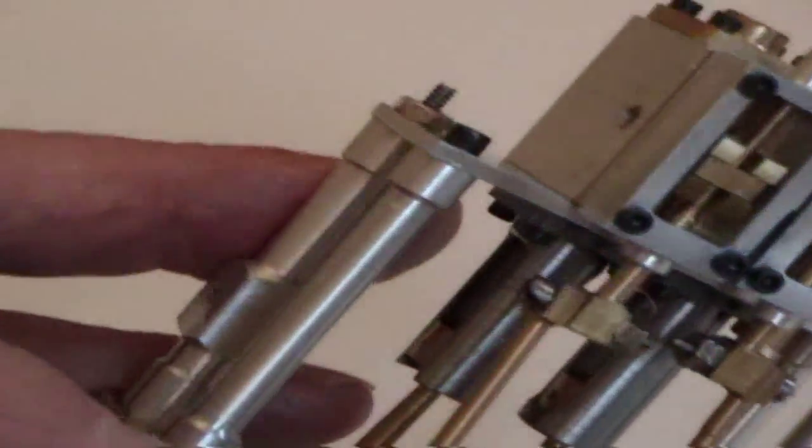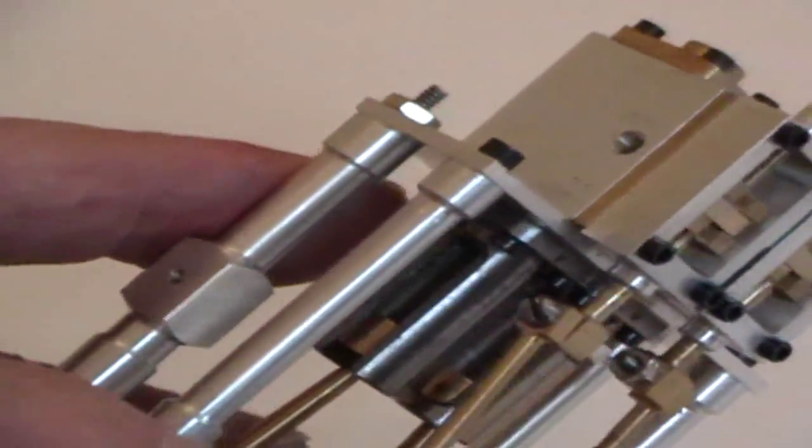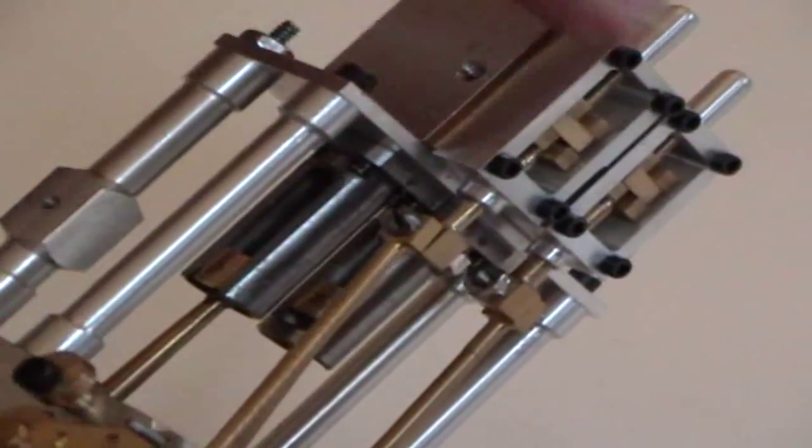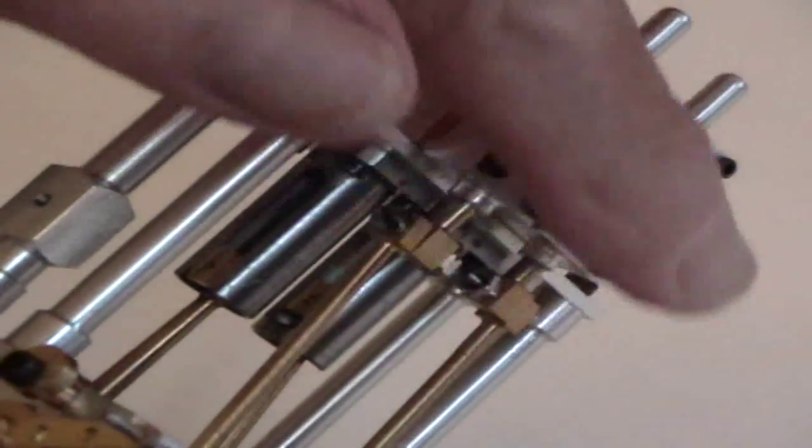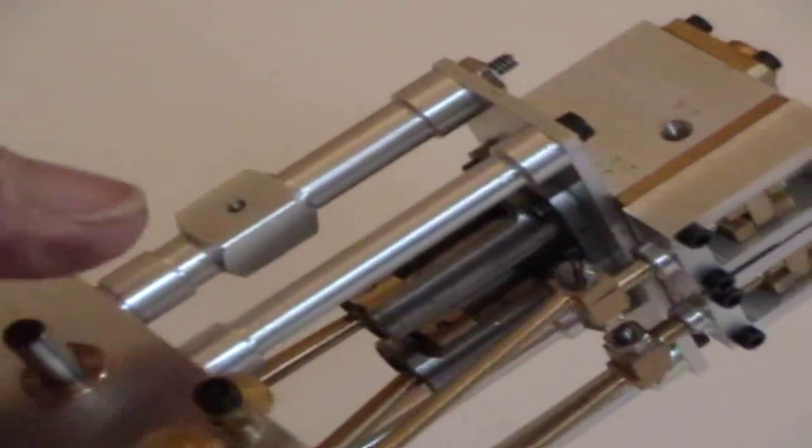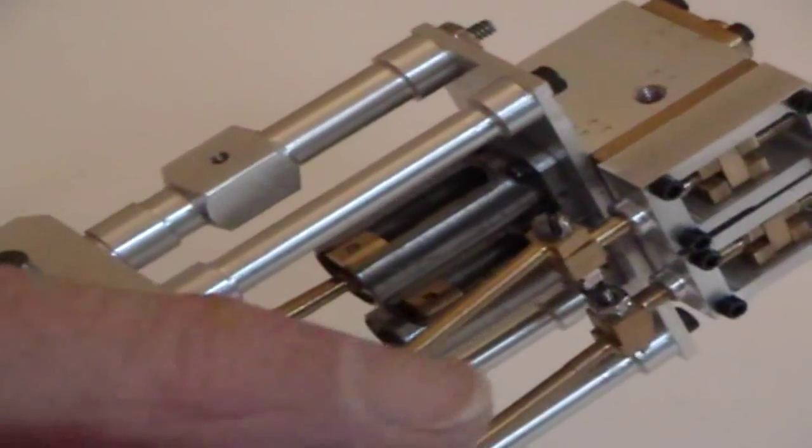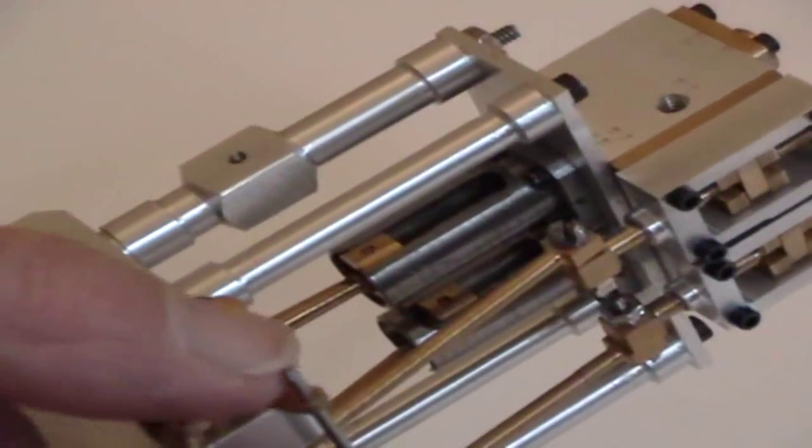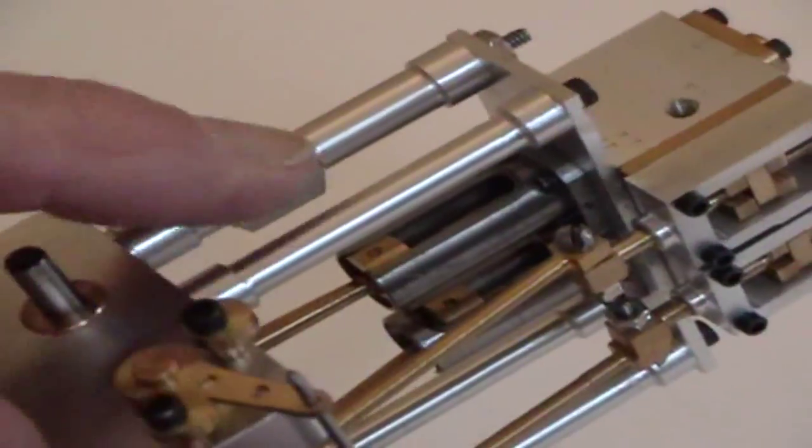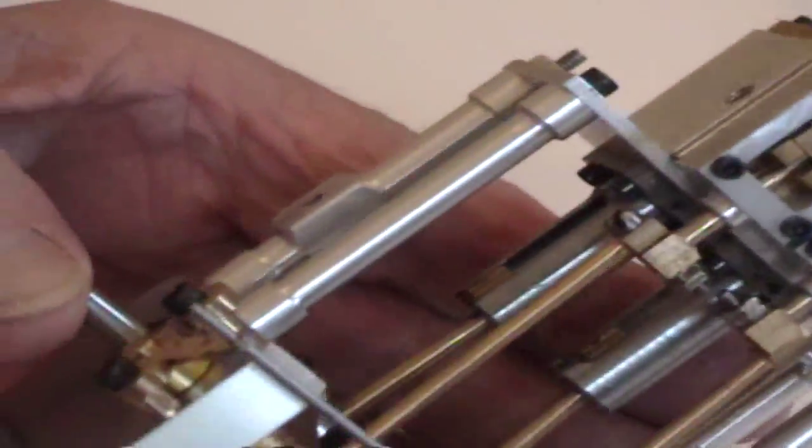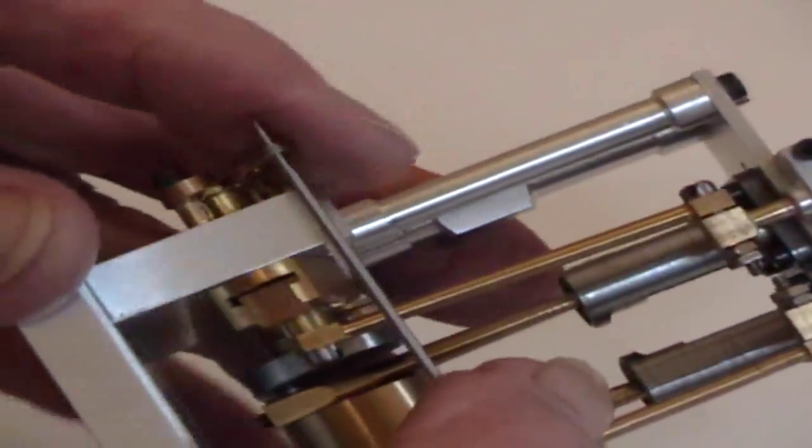Now basically all I have to do is make the cover for here and make the linkage that connects to the reversing gear. That's about it.